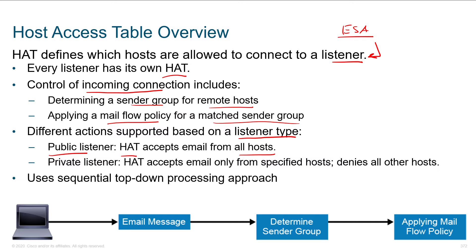The recipient access table defines who we're actually accepting emails for. We're not accepting emails for gmail.com, but we might be accepting emails for cisco.com. When we look at the private listener, this tends to be different — it's going to accept email from your internal email server and deny all other hosts. We're effectively whitelisting whoever our exchange server is. That server is allowed to send SMTP email. Somebody who used Nmap, did a port scan, found our listener, and tried to relay spam through us — nope, we won't accept it because they're not in the host access table.